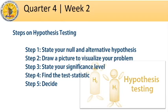First of all, we will discuss how hypotheses are being tested. Assuming the research problem is established, listed here are the steps to be followed. Step 1: State your null and alternative hypothesis. Last week's discussion covers this one. We'll just provide more examples so you can master it fully.